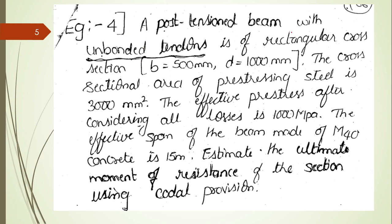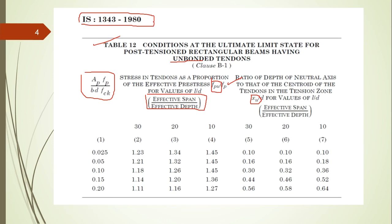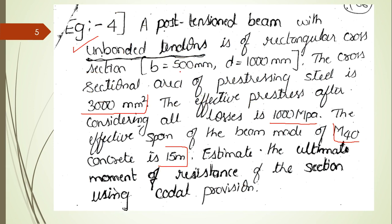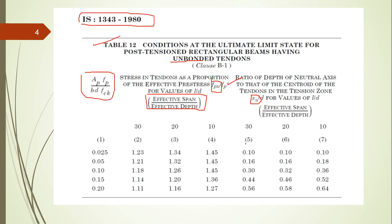Problem: A post-tension beam with unbonded tendons is of rectangular cross-section; b and d values are given. The cross-sectional area of the pre-stressing steel is 3000 mm². The effective pre-stress after considering all losses is 1000 MPa. The beam is made of M40 concrete with an effective span of 15 meters. Estimate the ultimate moment of resistance using the codal provision. Since this is post-tension with unbonded tendons, refer to IS 1343:1980. A page with Table 12 will be provided in the examination.